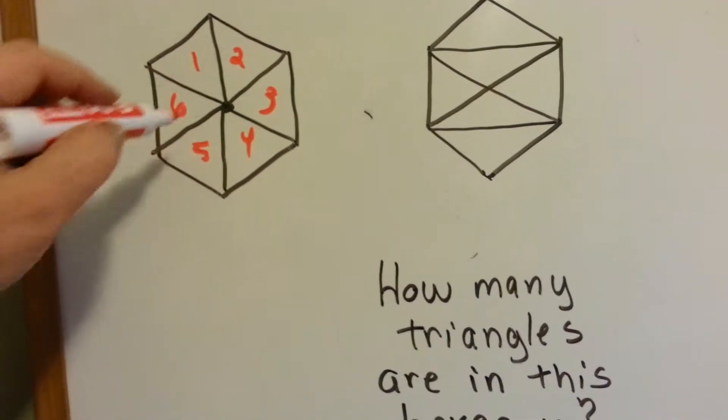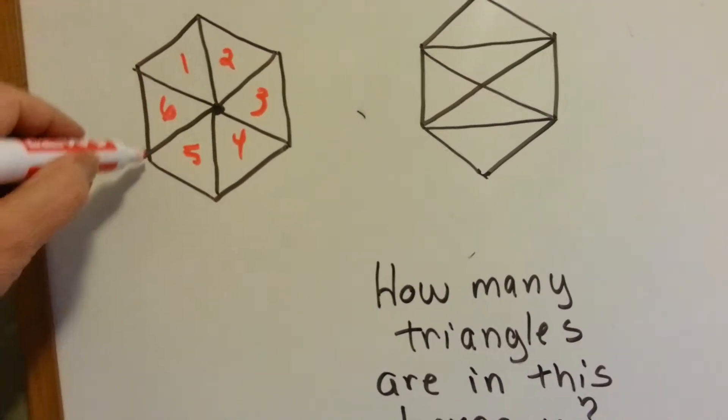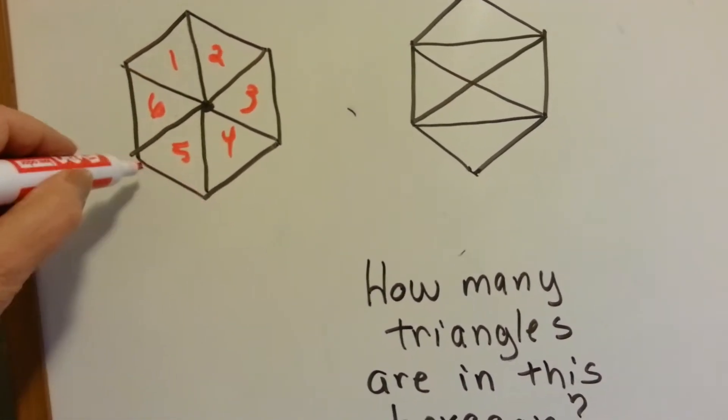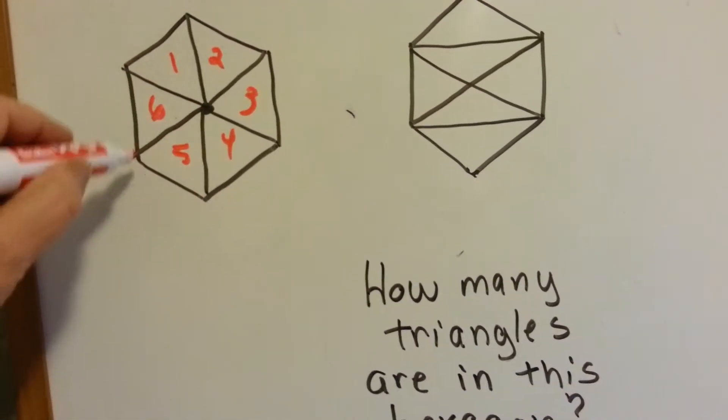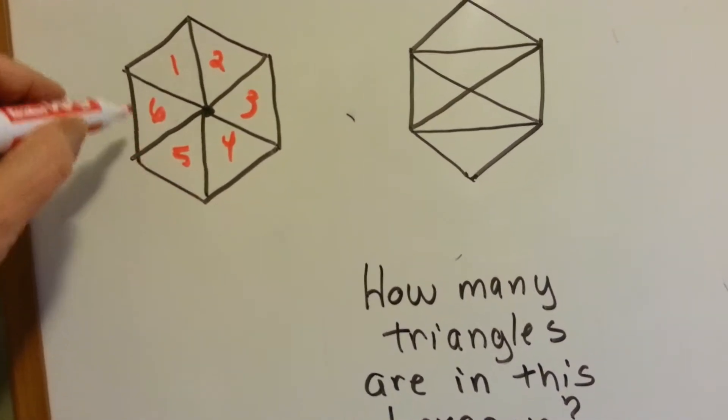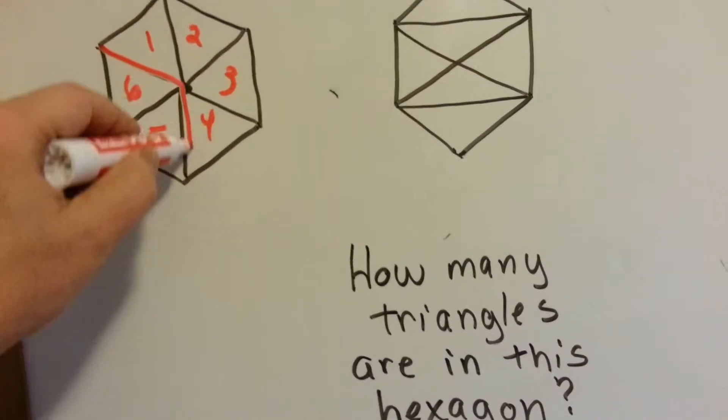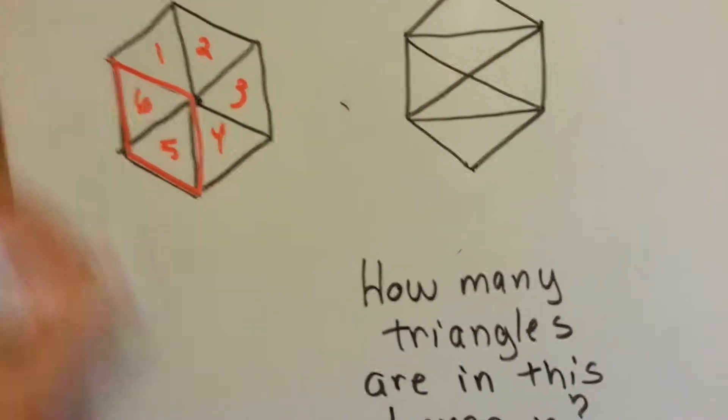Can you see any other triangles? Does this shape here make a triangle? No, it doesn't. It makes a quadrilateral, though, this shape right here. Can you see it? But it doesn't make a triangle, does it?